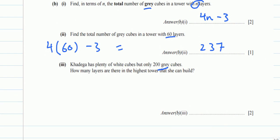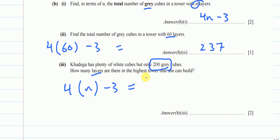For part B3, Khadija has plenty of white cubes but only 200 gray cubes. We need to find the maximum number of layers. Using our formula for gray cubes, the total cannot exceed 200, so we set 4n − 3 ≤ 200.